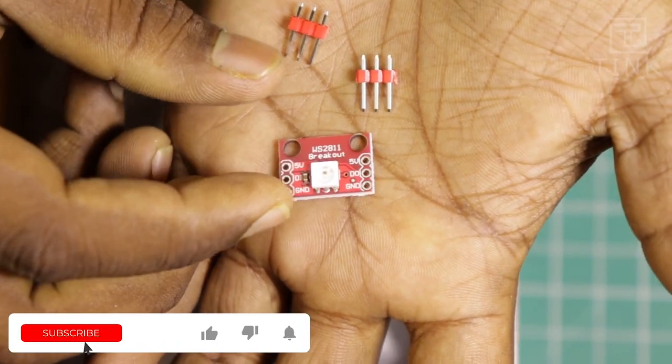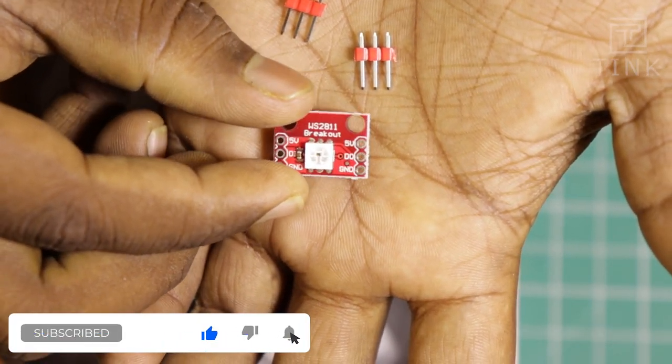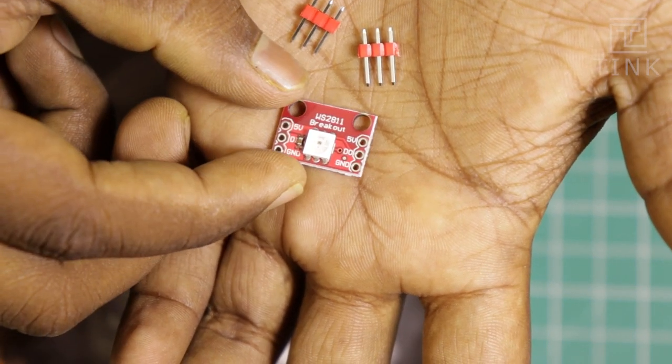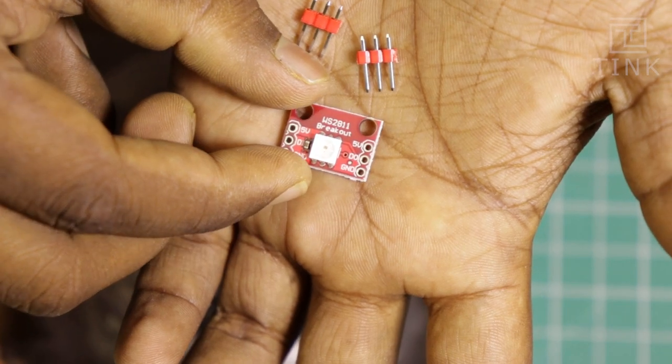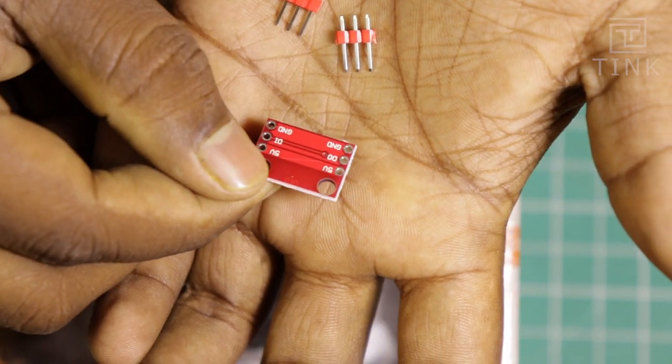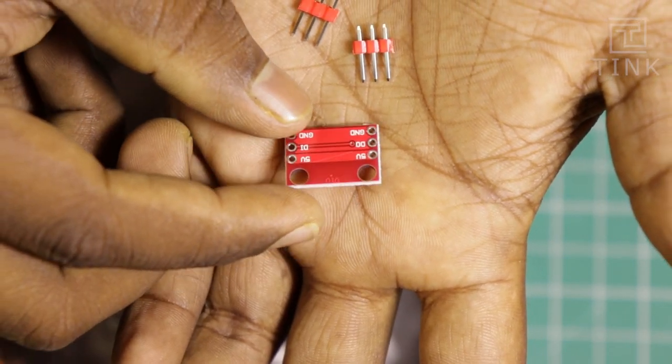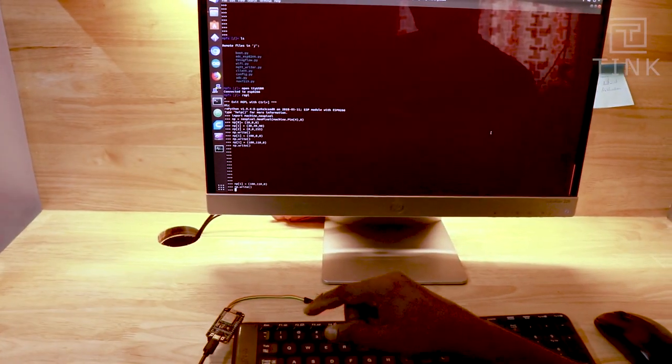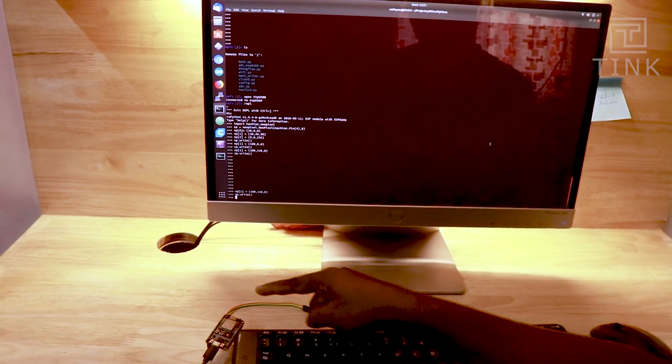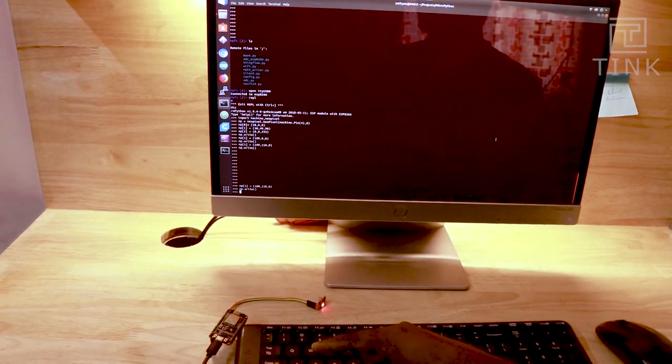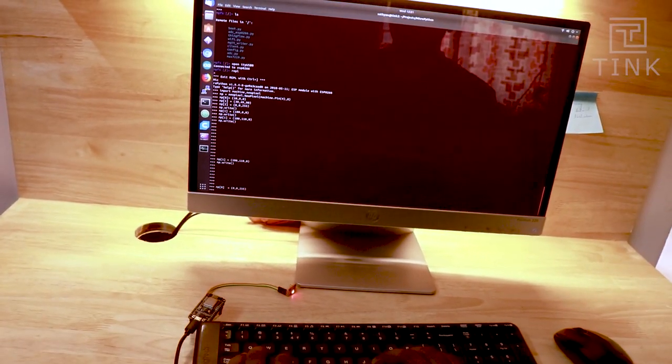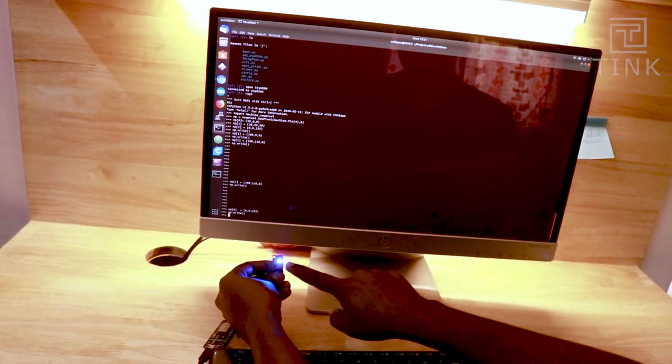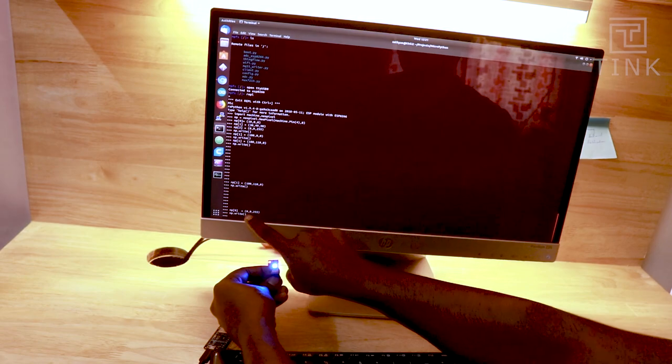Next we got a WS2811 RGB LED breakout module. This white component that you see on the board has got both the LED and the driver. Just by giving a particular input logic through the DN pin here, I can generate 16 million colors in various brightness. To test the module I have connected it to my ESP8266 and I'm going to use micropython to change the colors. Let's see, there it goes from red to blue just like that. Okay, let me try green.